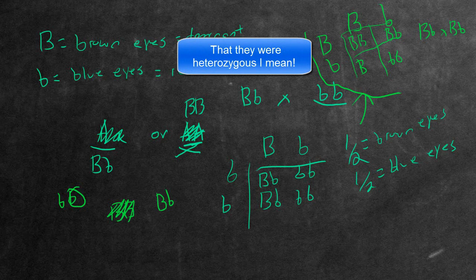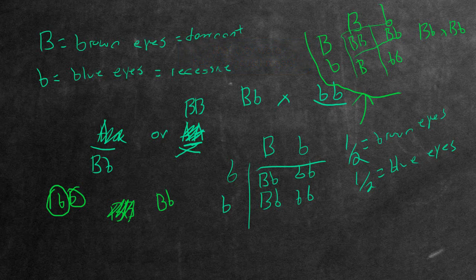The blue-eyed parents need to be homozygous recessive, which means they had to contribute at least one recessive allele to the offspring, telling us that in order to be brown-eyed, they must be heterozygous, or else they can't be brown-eyed.